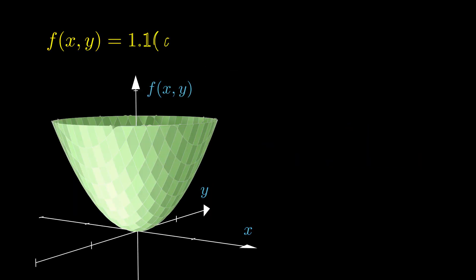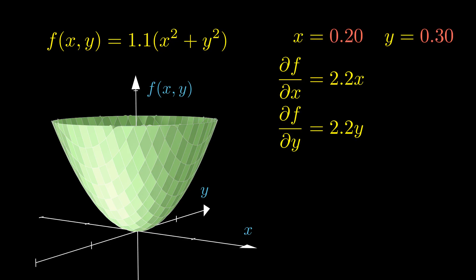Now let's try to run gradient descent on this example function. The partial derivatives for the gradient are given by these expressions, which, if you know calculus, you can verify for yourself. Let's initialize x and y with some random values. To find the gradient, all we need to do is plug these values into our formulas for the derivatives.